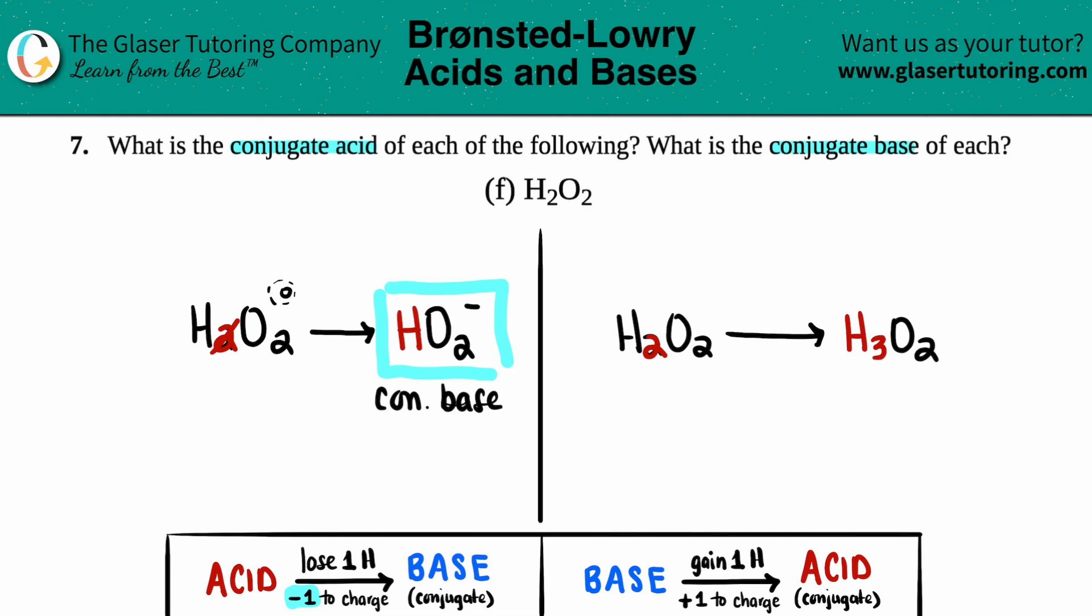And now we just have to correct for the charge. But remember, there was nothing here, zero. And if you're turning it into an acid, you plus one to the charge. So it's the opposite of what was done on the other side. So zero plus one is just a plus one. So you could say just plus, or you could say plus one. Doesn't matter. And that is the conjugate acid.